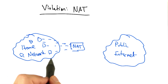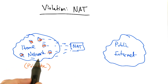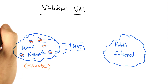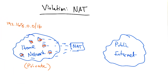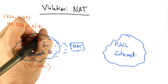The idea behind network address translation is that we can give each of these devices a private IP address. There are designated regions of the IP address space that are for private IP addresses. One of those is 192.168.0.0/16, and there are others which you can read about in RFC 3130.